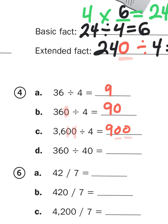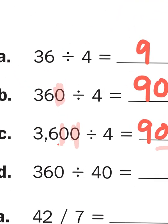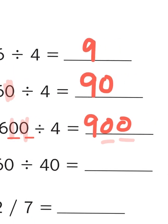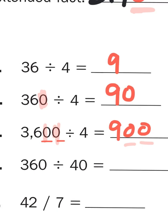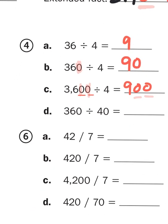So as long as I remember to count my zeros on each side of the equation, I'll be okay. So there's two zeros on the left, so there has to be two zeros on the right. Then when I have 360 divided by 4 tens or 40, I'm still going to get 9. Because 9 times 40 gives me 360, or 9 times 4 tens gives me 36 tens.